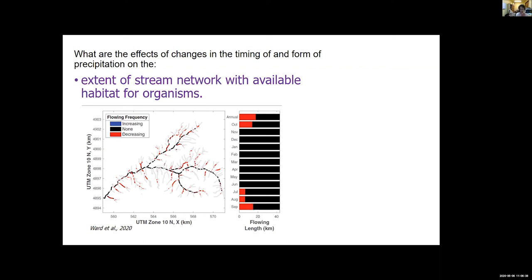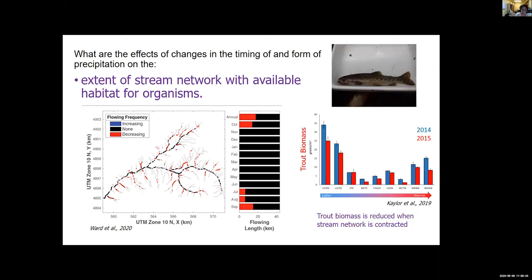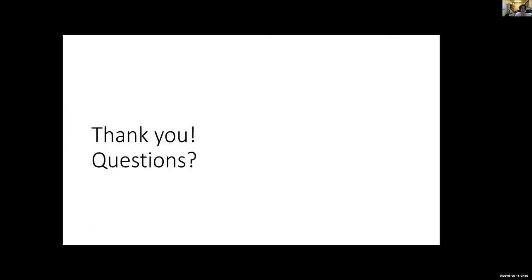Related to this, another study looked at the effect of the drought of 2015 on trout biomass and found significant changes in most tributaries. You can see here that trout biomass in 2015 — the red bars — are lower than trout biomass in 2014 — the blue bars. And with that, I'll take questions after. Thank you very much.